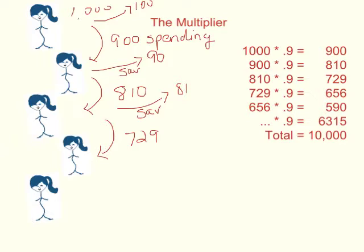Alright, so $729 in this next round of spending. Some of that gets kind of shuttled off to the savings bank. And so they're going to save $73 of it. They're going to turn around and spend the other 90%, which is $656. And on and on this goes.